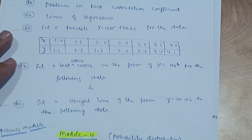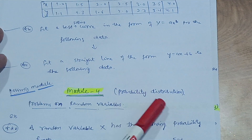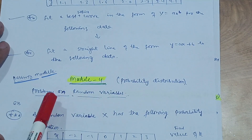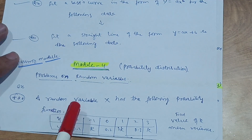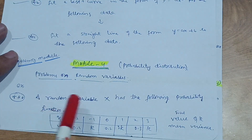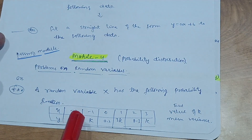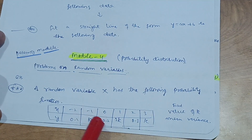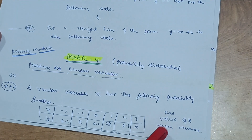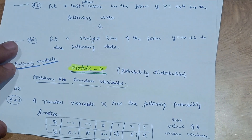Module 4 is also a passing module — probability distributions. You have to solve problems on random variables. A typical question will be: a random variable X has the following probability function, with values like x = -2, -1, 0, 1, 2, 3 and probabilities 0.1, k, 0.2, 2k, 0.3, k. You have to find the value of k, the mean, and the variance.